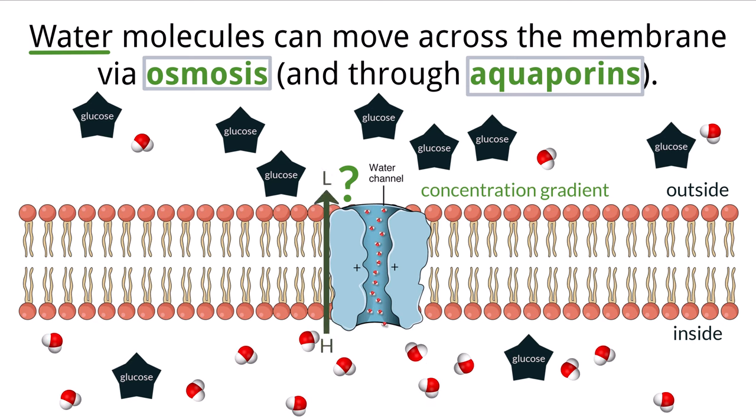If the concentration gradient changes, so does the water movement. If there is a high solute concentration outside of the cell compared to the inside, the water will move across its gradient from high to low, moving out of the cell. This happens because the cell membrane is selectively permeable to some substances, meaning it does not let them through. This can cause a gradient to build up over time, which will force water to move across the membrane to spread out and be balanced. Gradients are a very important concept in cellular biology.